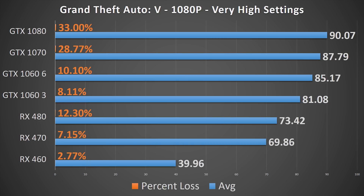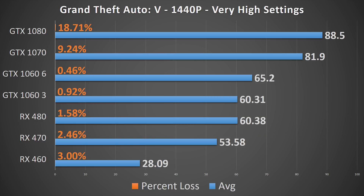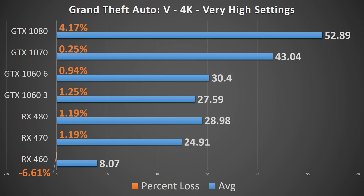Grand Theft Auto V is a bit more limiting, with all GPUs showing restrictions at 1080p, up to 30% at the top levels. At 1440p it's less restrictive, but still the top GPUs are held back. It's only at 4K that the GTX 1080 is the only card still limited by the Core i3, but only by about 3 FPS, still pushing some respectable gaming numbers.